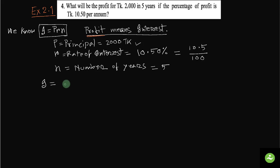So I equals to 2000 into 10.5 by 100 into 5. Because it is 10.5 percent, we write 10.5 by 100. Five is the number of years.